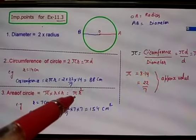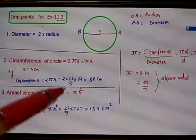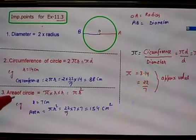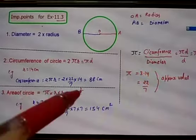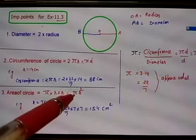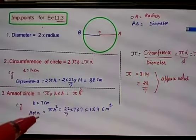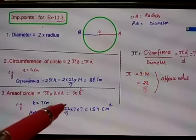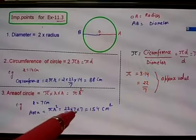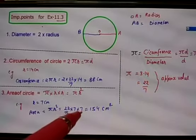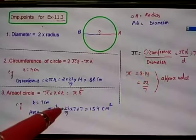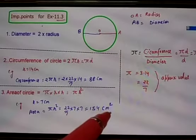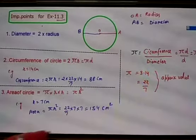r² means r into r. If the radius given is 7 centimeters, find the area of the circle using the formula πr². That is 22/7 into 7 into 7. The 7s get cancelled, and 22 into 7 makes it 154 centimeters square.